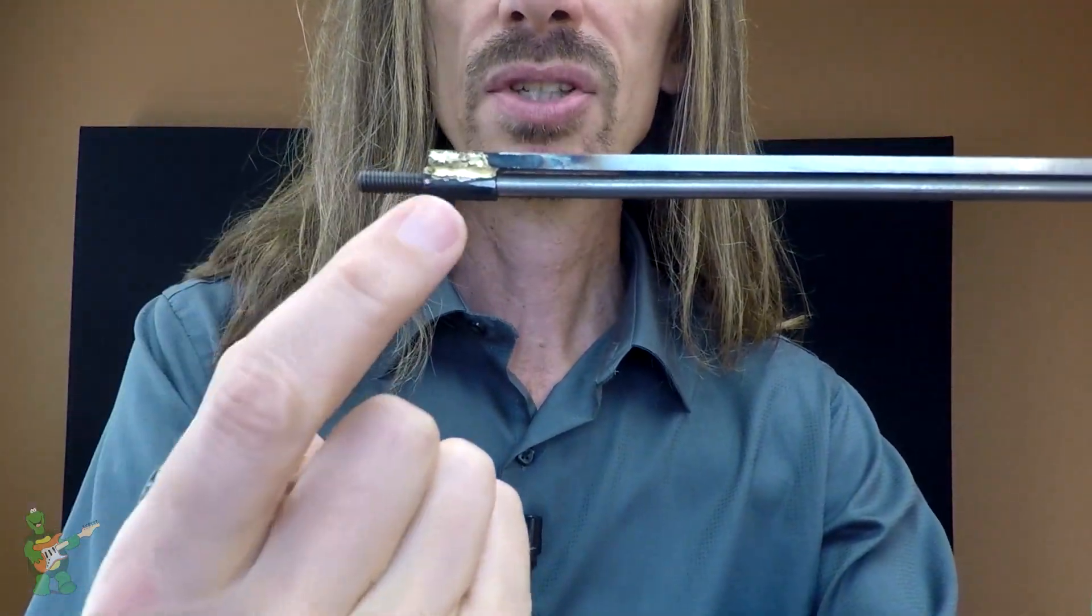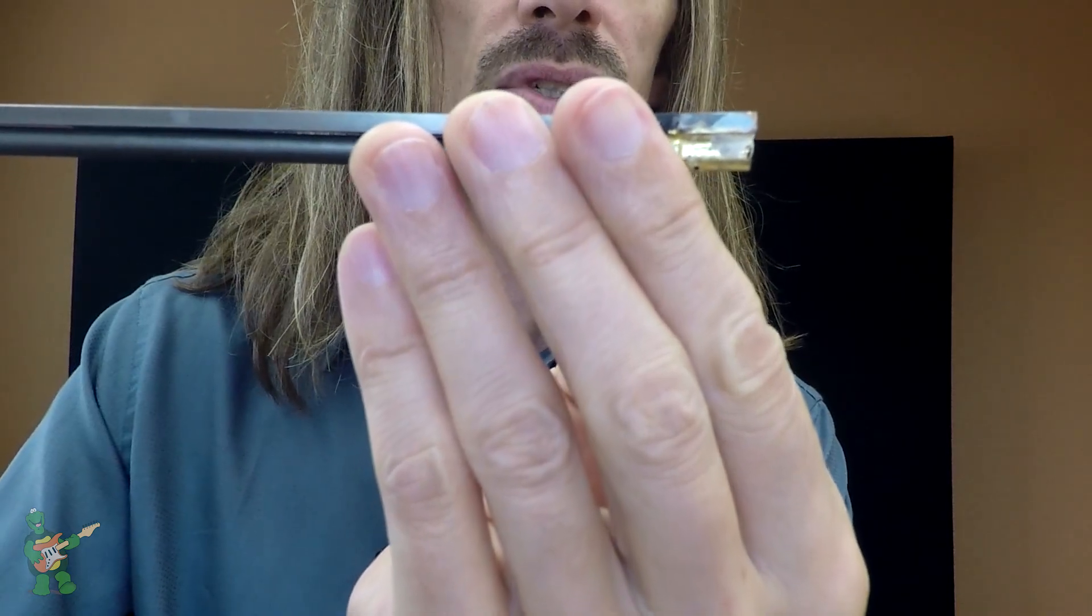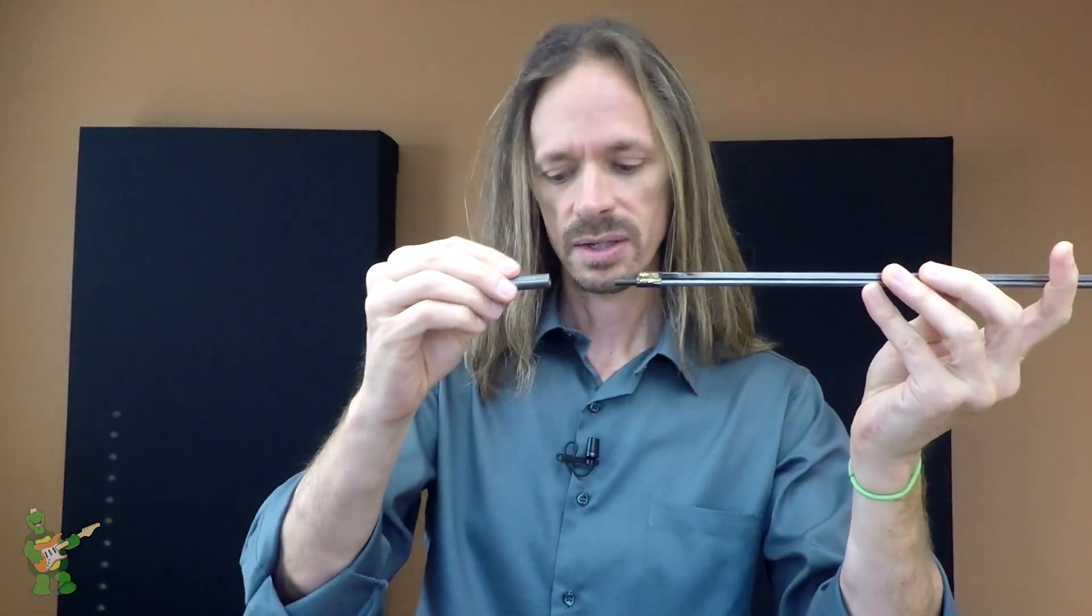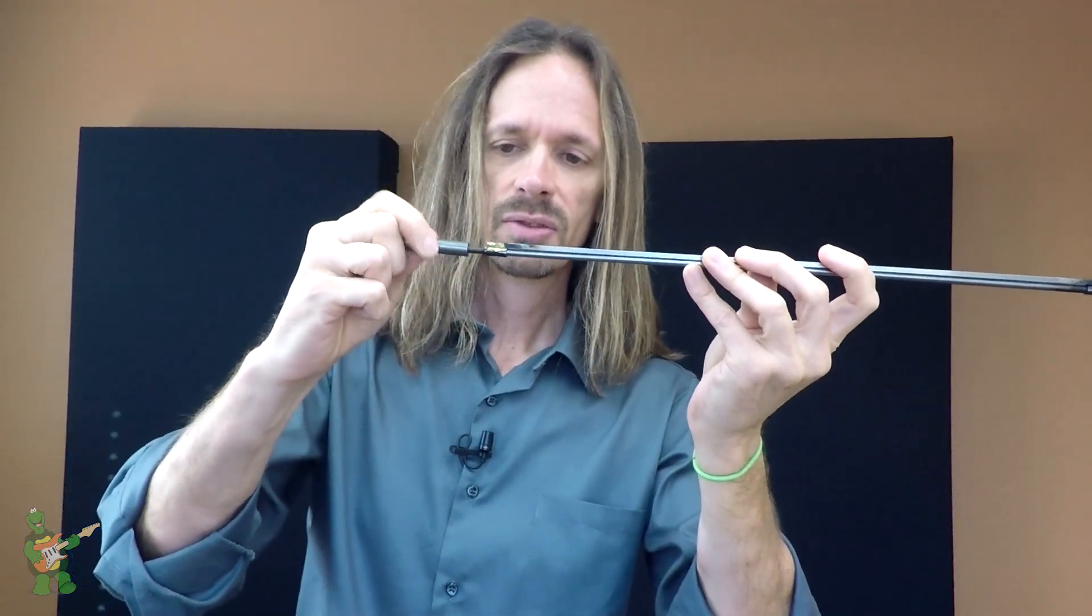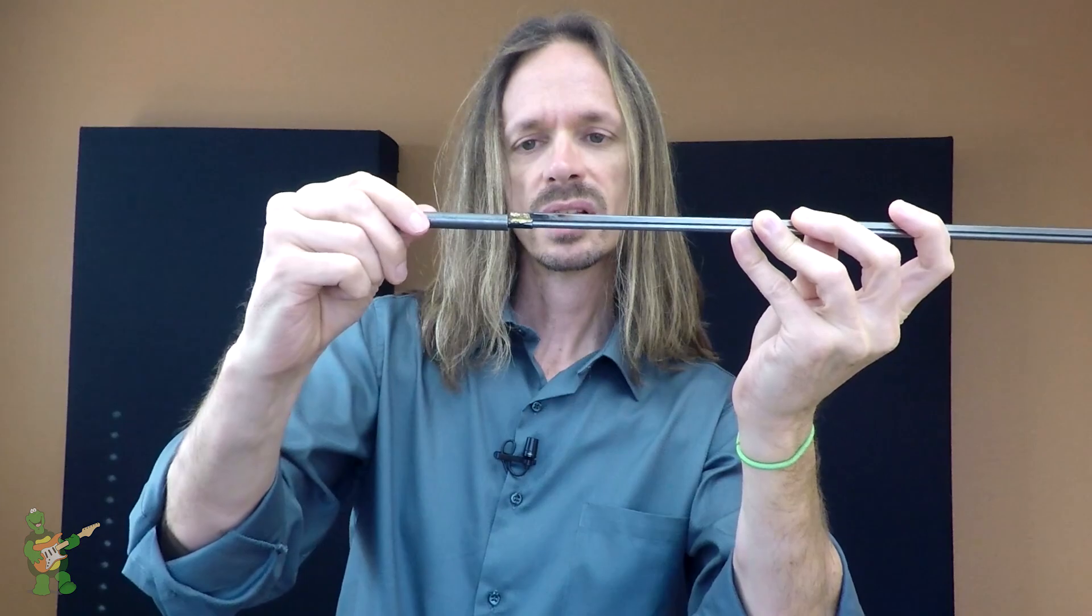And then at this end, both bars are welded together, and then here is the adjustment nut. As I tighten this adjustment nut, it will butt up against the tube.